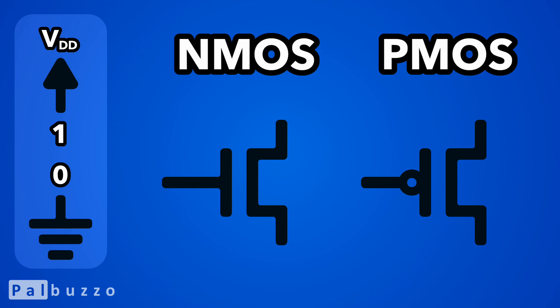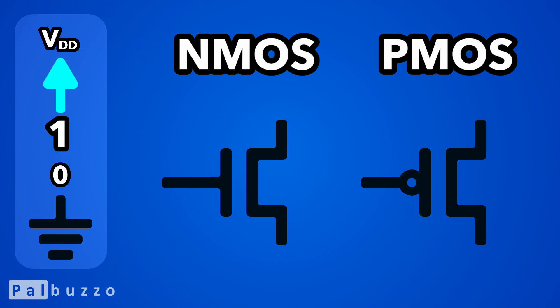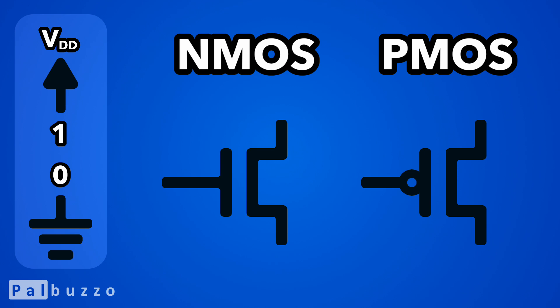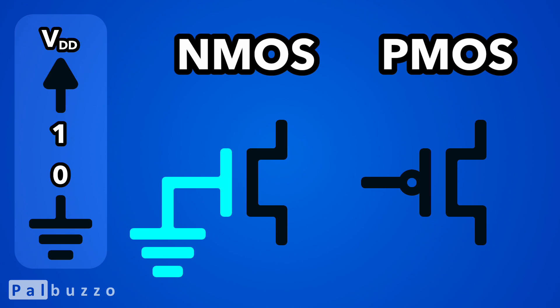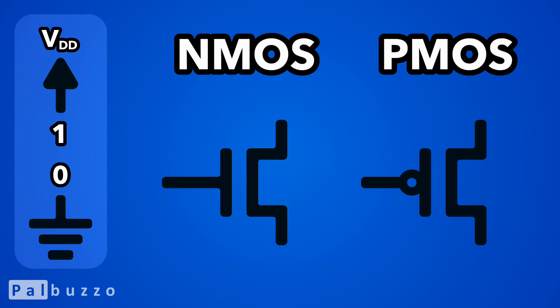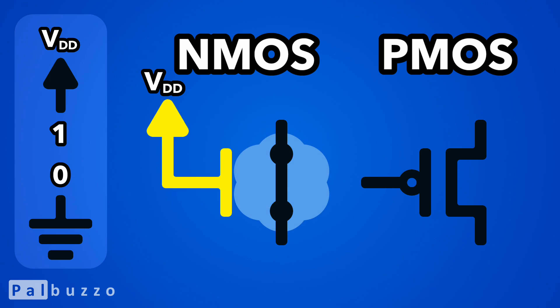These two voltage levels allow us to distinctly represent 0 and 1. With NMOS transistors, when the gate is connected to ground, the source and drain will be disconnected. But when the NMOS's gate is connected to VDD, it will cause the source and drain to be connected.